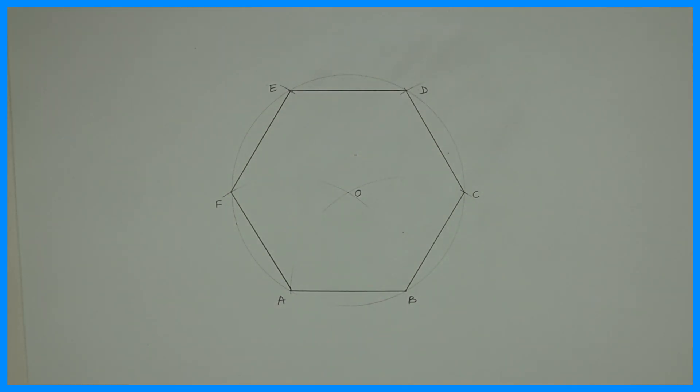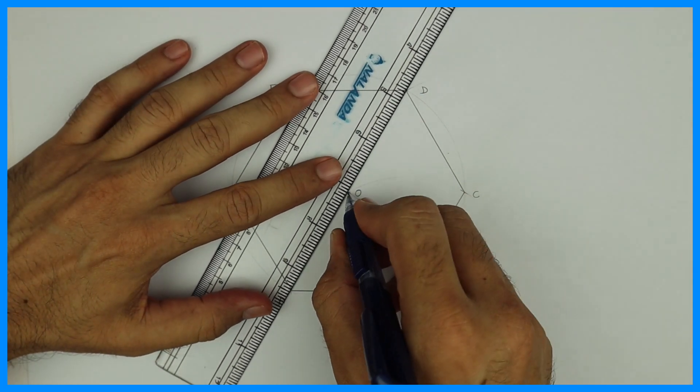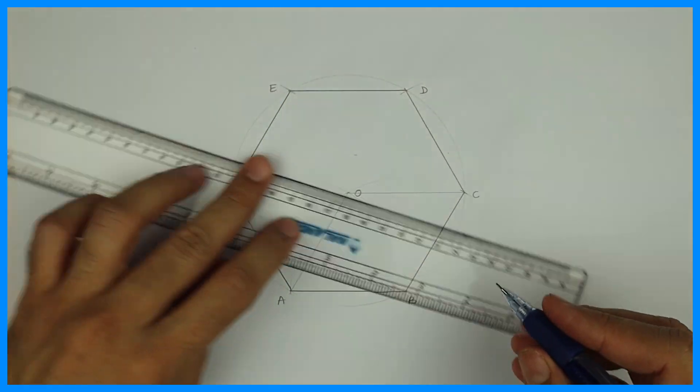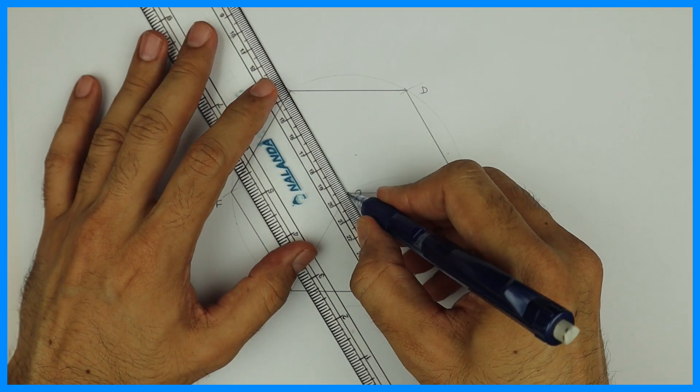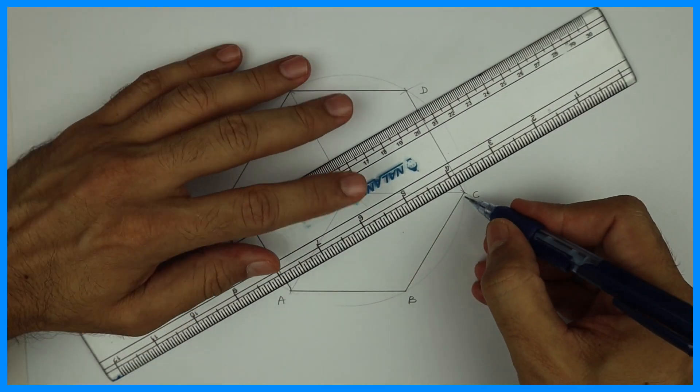After this, join point O to A and O to C. We are doing alternate points joining to point O. Now O to E. So we have got three parts of the hexagon.